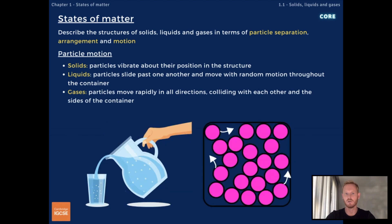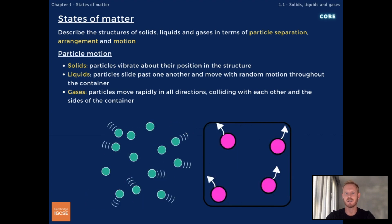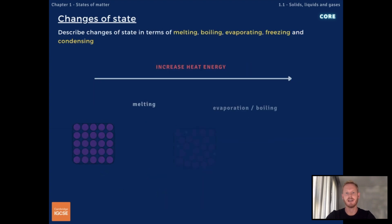In liquids, particles move from place to place because intermolecular forces aren't as strong. This allows liquids to flow and take the shape of their container. Finally, gas particles are held together by only very weak forces of attraction. As a result, particles move rapidly in all directions, colliding with each other and the sides of the container.